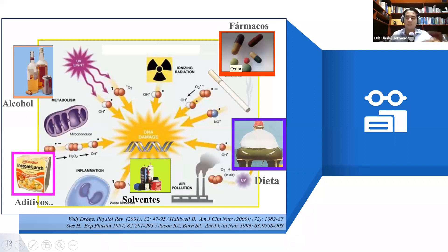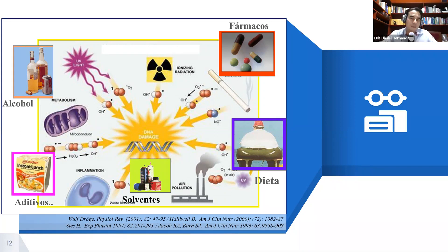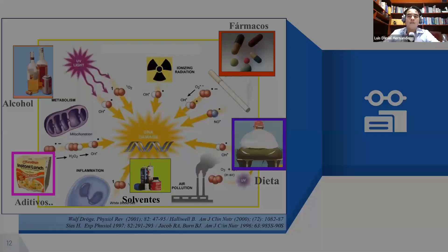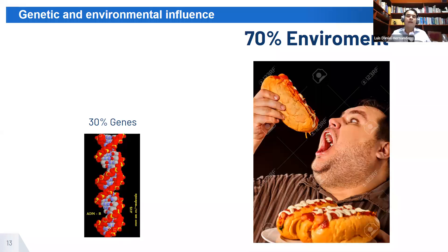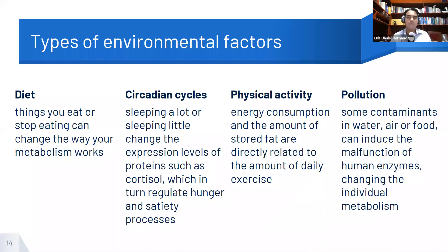So far, it has not been shown that there is a genetic disposition to obesity greater than 30%. This means that 70% can be attributed to external factors called environmental factors. One of these factors is diet — the things you eat or stop eating can change the way your metabolism works.